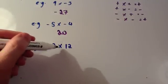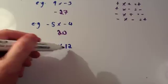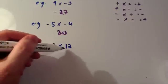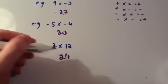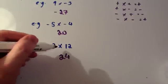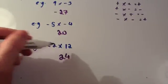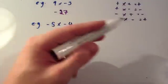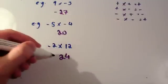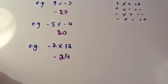Next one: minus 2, or negative 2, times 12. Well, 2 times 12 is 24. And it's a negative times a positive — they're different to each other — so it's going to be negative 24. For sure.